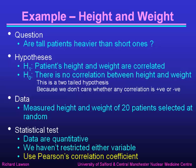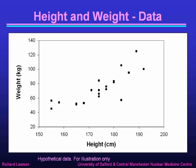The data are clearly quantitative. We haven't restricted either variable; we have a full range of height and weight, so we can use Pearson's correlation coefficient. Here's our scatter plot of weight against height for our 20 patients, which I've already showed you. It does seem to indicate that there is a tendency for weight to increase with height, at least for those who are over 170 cm. But we want to prove whether this is a statistically significant correlation.